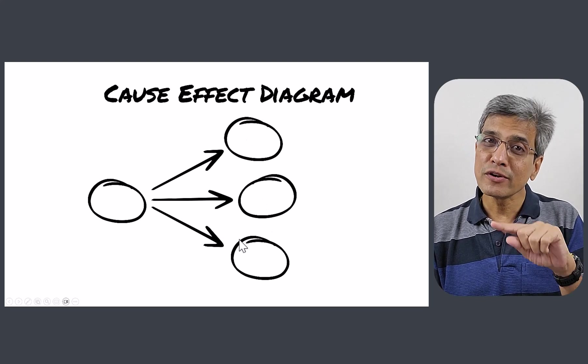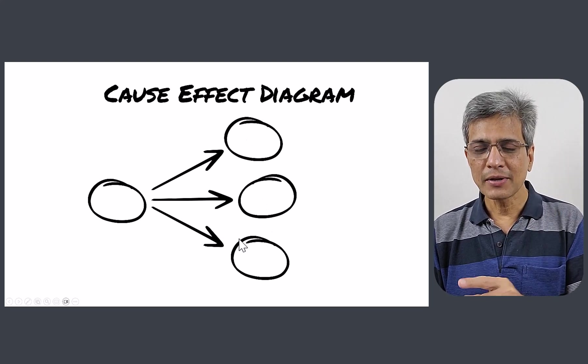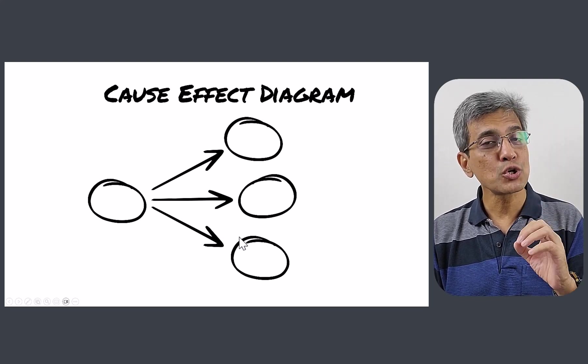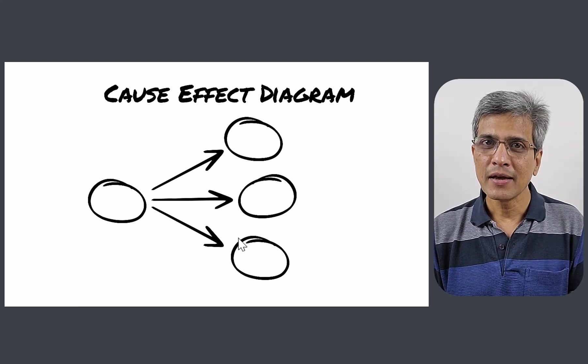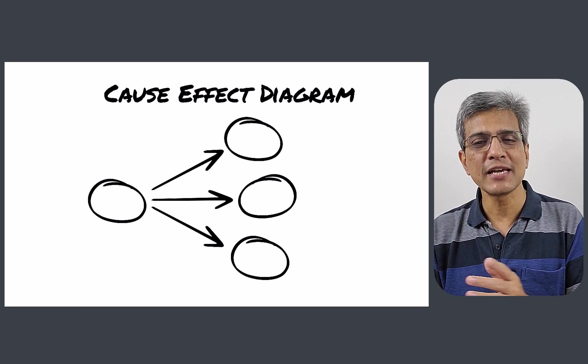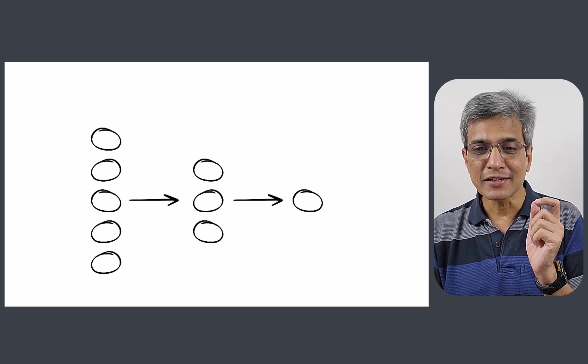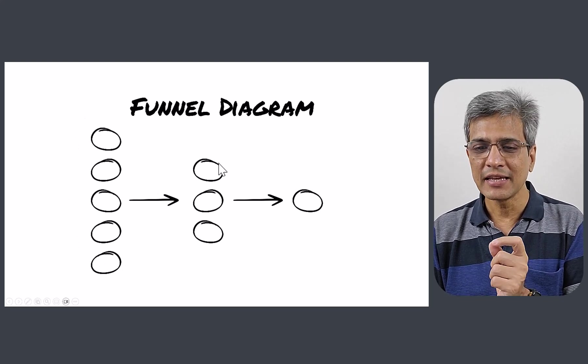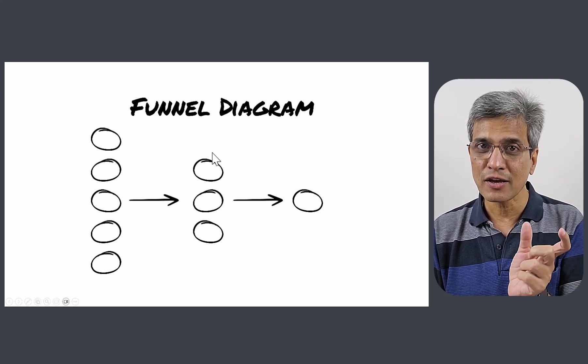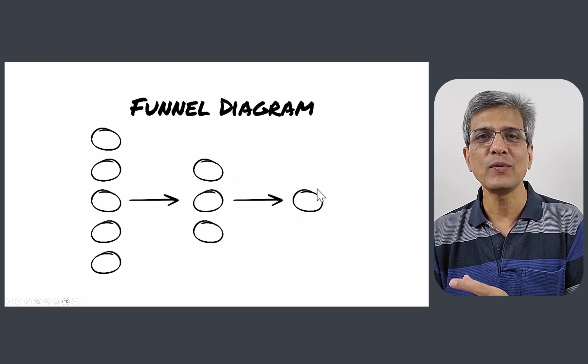Now, if I were to reverse the order, for example, instead of one-to-many, if I were to show many-to-one relationship, I have a different diagram. Now, if I were to break this into multiple stages, I get this. Can you see here, this is a funnel diagram. We have these many people entering the funnel, then the next stage of the funnel reduces a few of the people and then finally, we have this result.